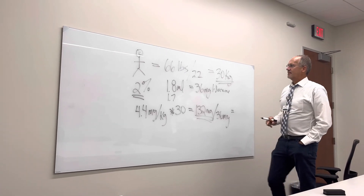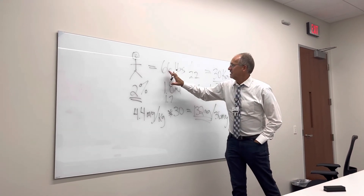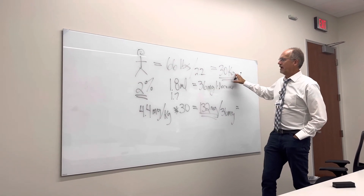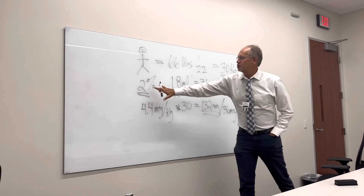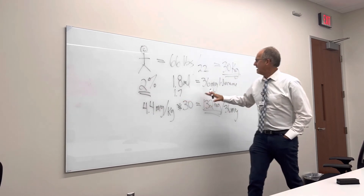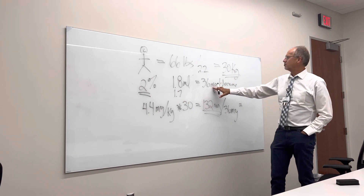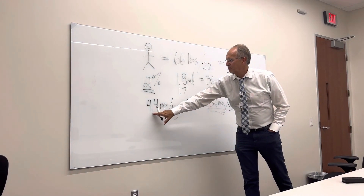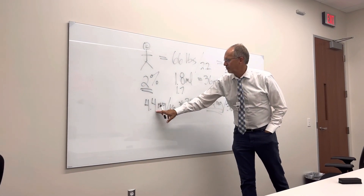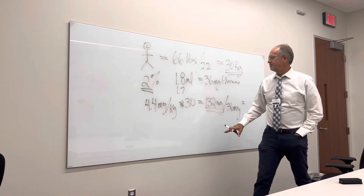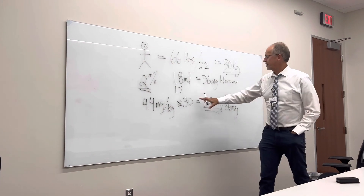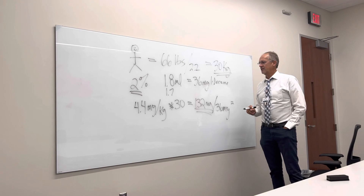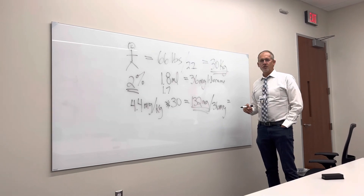Brief review: 66 pound child divided by 2.2 gives you 30 kilograms. We're using 2% lidocaine, which has 36 milligrams of drug in it. We know that we can give a top dose of 4.4 milligrams per kilogram of lidocaine. The child's weight was 30 kilograms, we multiply that and that gave us 132 milligrams. If you have any questions, come see us.